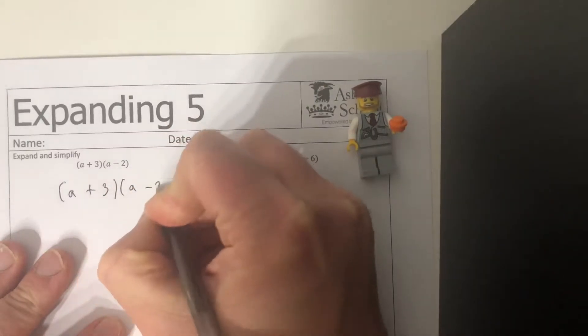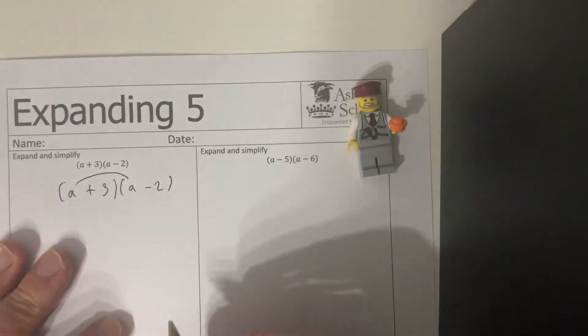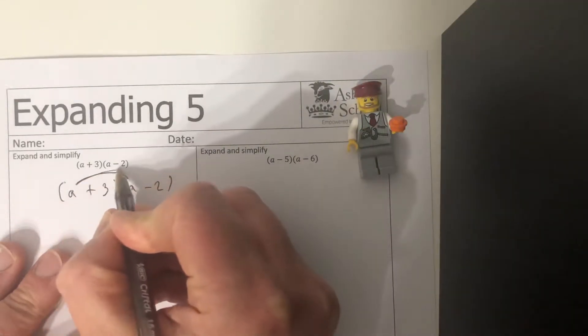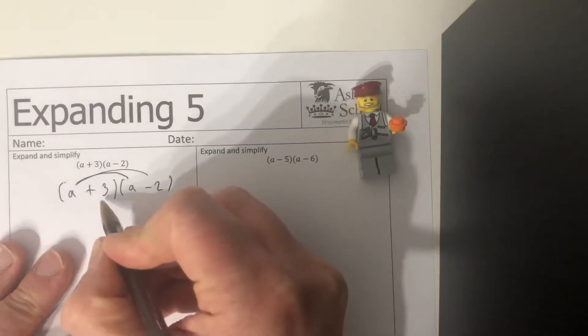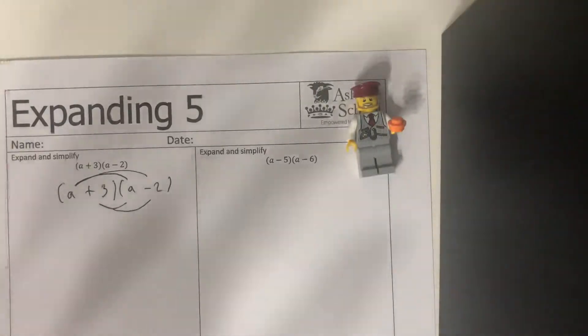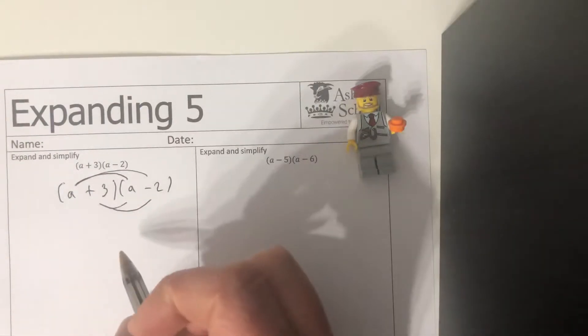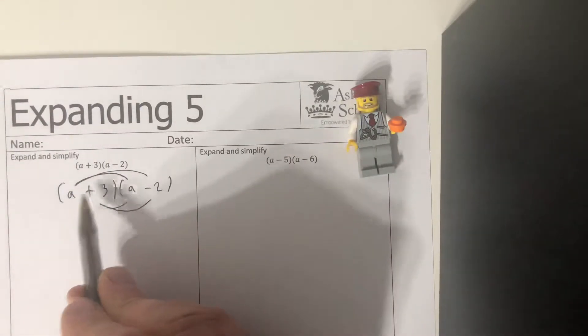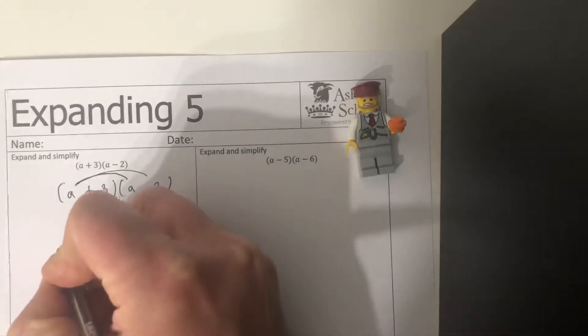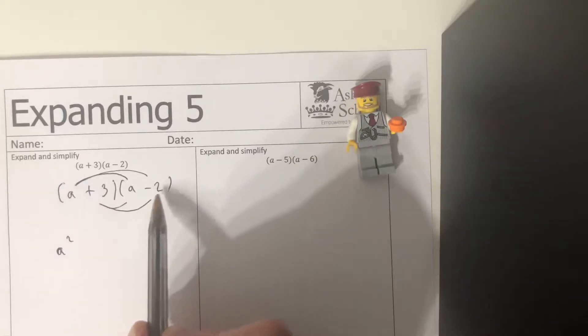So the idea is I'll just make it a little bit bigger for you in my best handwriting. The first value gets times by the first value so a times a, then we're going to multiply a by the minus two, and then we're going to multiply the plus three by the a, and finally the plus three by minus two. So the four arrows we spoke about last lesson, they're still here. If we just go through and follow all those from left to left and then left to right and so on, if we do it in a systematic way, a times a is a squared.